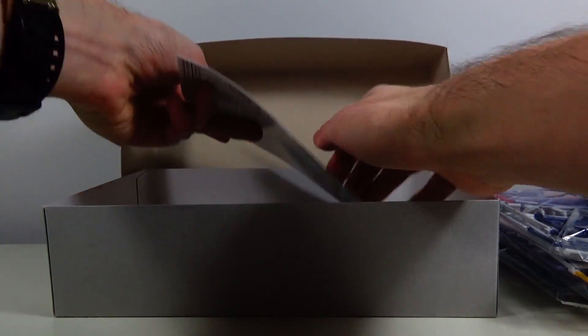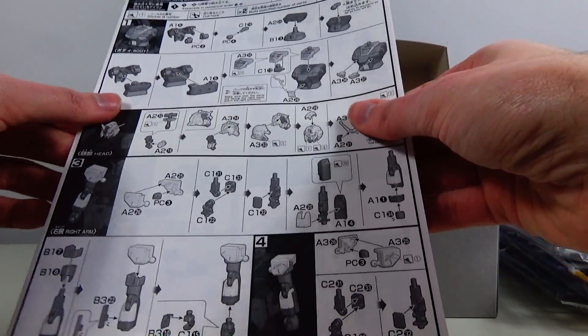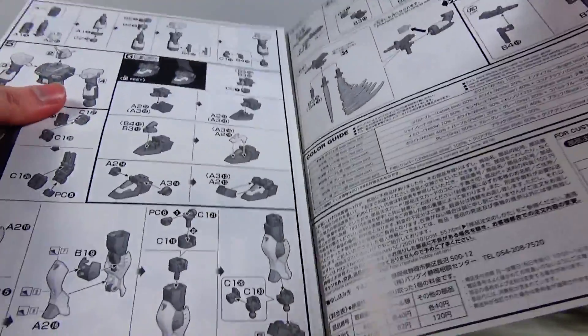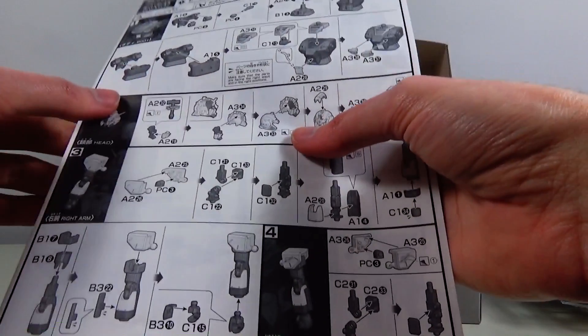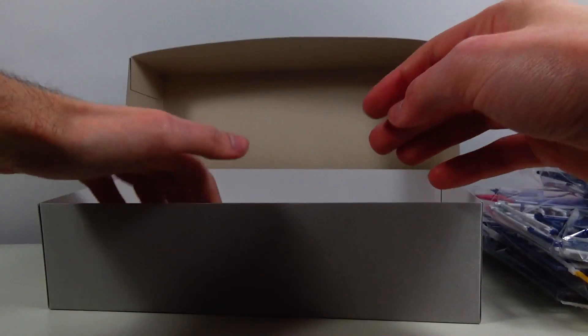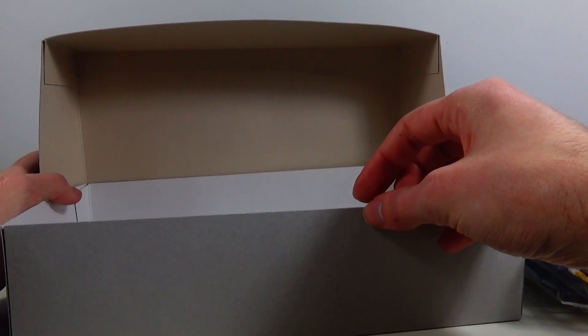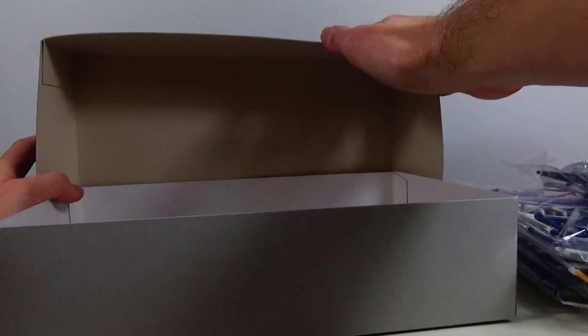And then finally, let's have a look at the manual. Typical P-Bandai fashion just tells you how to build a model kit with no cool extras like we usually get with standard model kits, which is a shame because it would have been cool to have some extra lore about the Gundam Pixie.